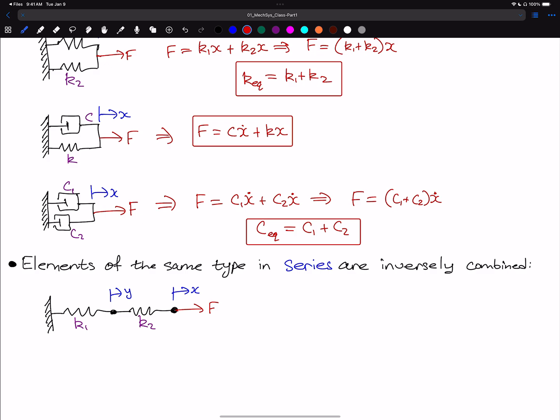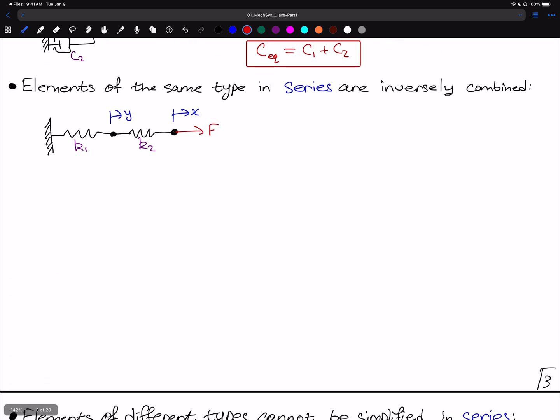Now what happens if you have elements of the same type in a series configuration? In this case, you're going to inversely combine them. Let's consider this. As drawn here, the force is going to be the same in each spring, and that's due to Newton's third law. The force is the same in each spring.